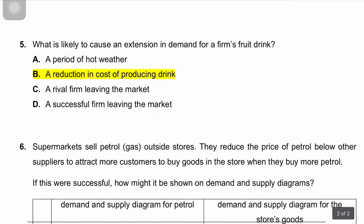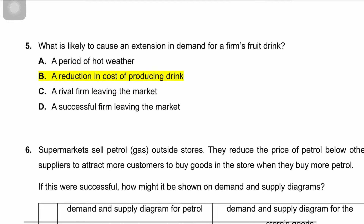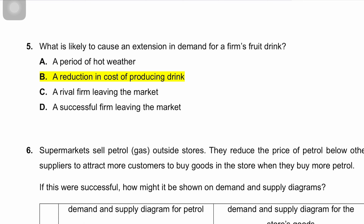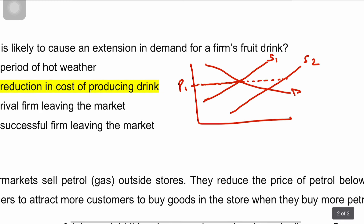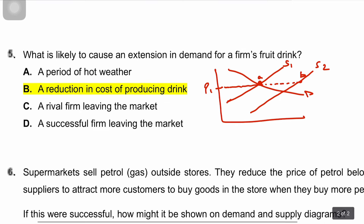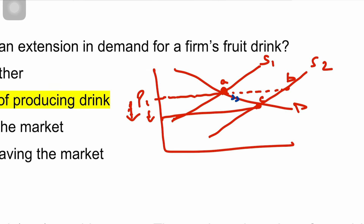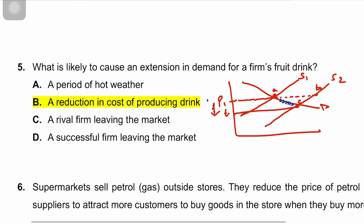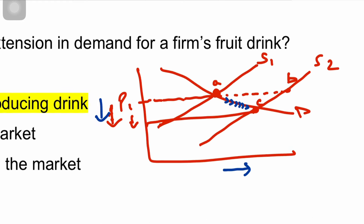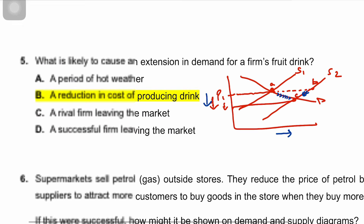Question five asks what is likely to cause an extension in demand for a firm's fruit drink. The correct answer is B — a reduction in the cost of producing the drink. This shifts the supply curve outward to the right from S1 to S2, creating a surplus at price P1. To eliminate the surplus, prices fall, causing an extension along the demand curve and restoring equilibrium at point C, along with a contraction in supply.